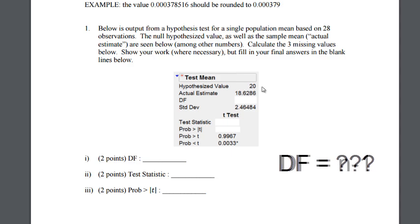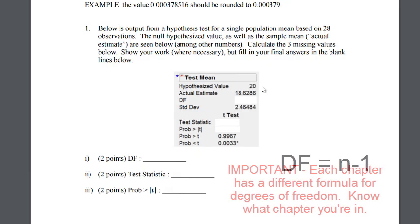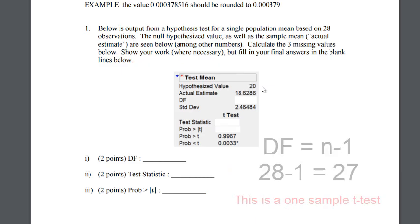The formula for degrees of freedom here is n minus 1 and this is because it's a one sample t. If it was a two sample t it would be a more complicated formula and if it was a chi-squared problem it'd be rows minus 1 times columns minus 1. The degrees of freedom will be determined by the type of problem we are doing so make sure to identify what you're doing from the start.